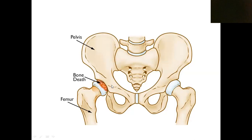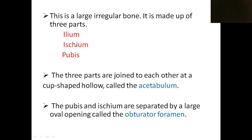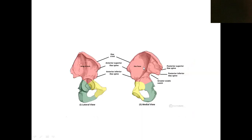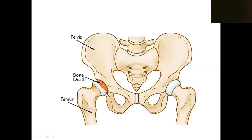The hip bone has three parts: ilium, ischium, and pubis. This is the inner or medial side and this is the outer or lateral side of the hip bone. The upper broad portion is the ilium, the lower part is the ischium, and this part is the pubis.